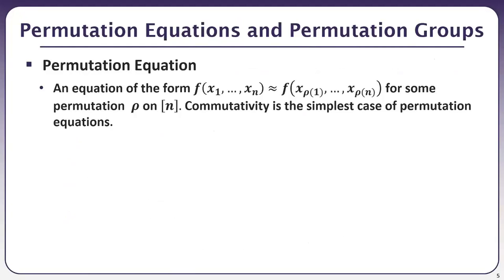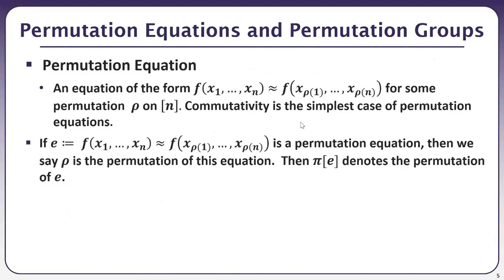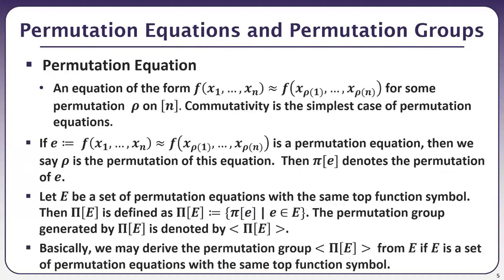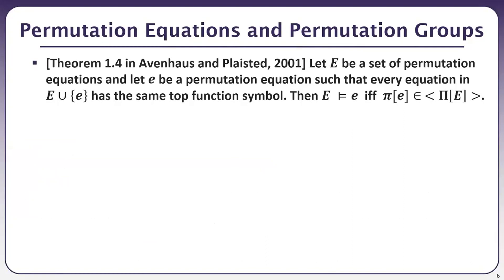A permutation equation is an equation of the form f(x1,...,xn) = f(x_σ(1),...,x_σ(n)) for some permutation σ on N. Commutativity is the simplest case of permutation equations. For each permutation equation, we can derive the permutation corresponding to it. If E is a set of permutation equations with the same top function symbol, we can derive the set of permutations from E, and the permutation group can be generated by this set. This result applies to uniform permutative equations but can also be applicable to a set of permutation equations with the same top function symbol.